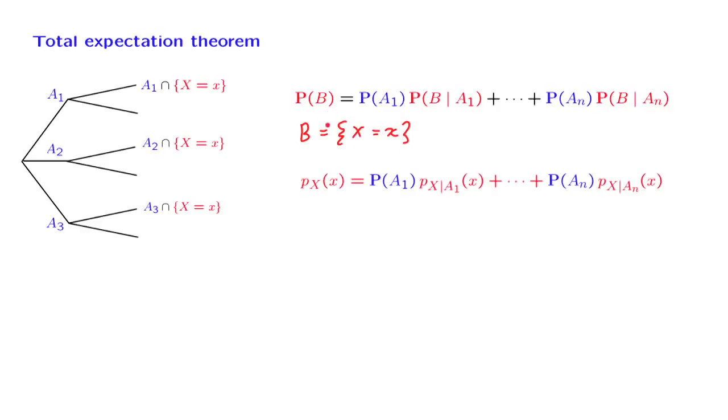Now, what is this probability? The probability that event B occurs, having fixed the particular choice of little x, is the value of the PMF at that particular x.